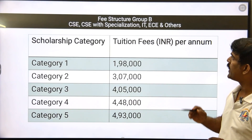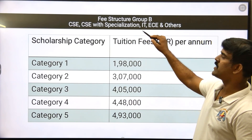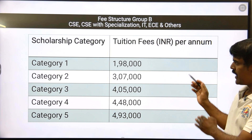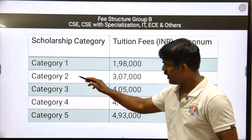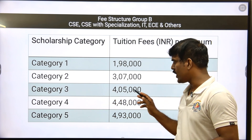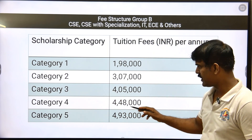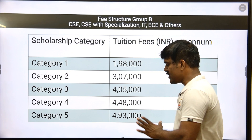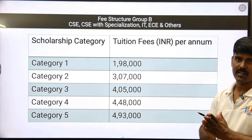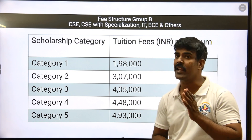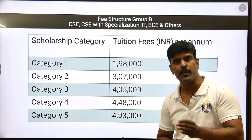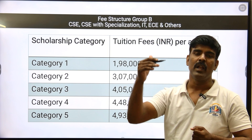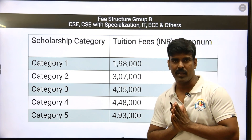For Group B — CSE, CSE with specialization, IT, ECE and other departments — the fee structure is: Category 1 is 1,98,000. Category 2 is 3,07,000. Category 3 is 4,05,000. Category 4 is 4,48,000. Category 5 is 4,93,000. So if you select category 5, you can spend approximately 5 lakhs in fees. Plus hostel fees of 2 lakhs, so around 28 to 30 lakhs total. For BITS Pilani, maximum 35 lakhs, minimum 28 lakhs. For VIT, minimum 20 lakhs, up to 28 to 30 lakhs if you choose category 5.